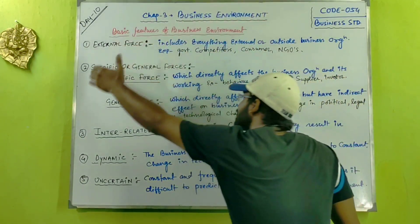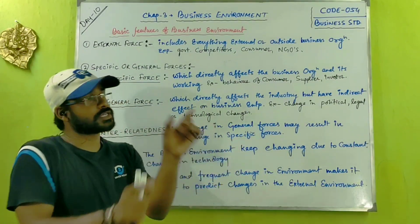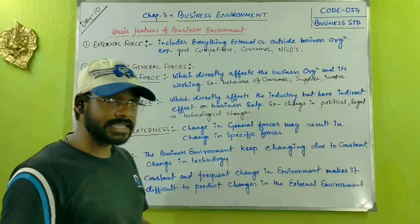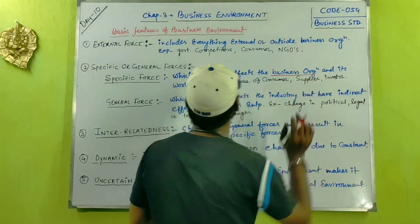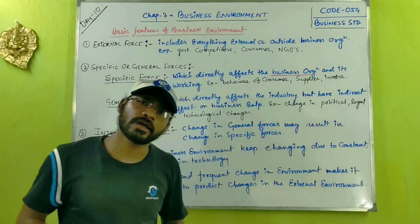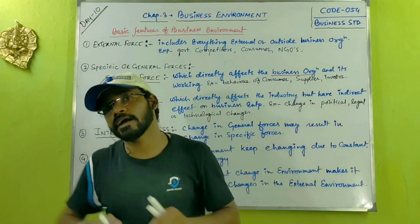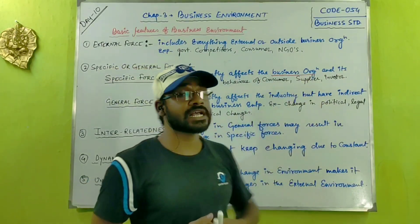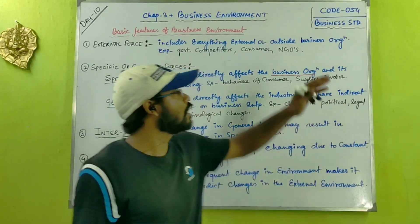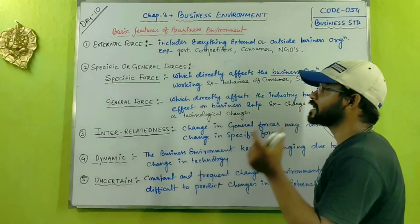The second feature is specific and general forces. Specific forces are those that directly affect the business organization — such as the behavior of customers, suppliers, and investors. For example, if customer taste and preference change and demand increases, then production increases accordingly. These specific forces directly and immediately impact business activity.